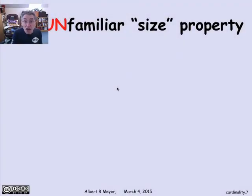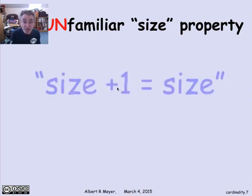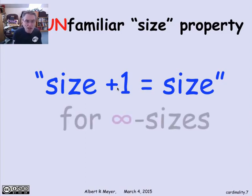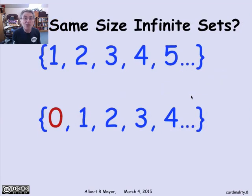Well, let's look at an unfamiliar size property, something that's not true of finite sets, where we have to start being careful and not just hand wave and use our intuition about finite sets. Namely, for infinite sizes, size plus 1 is equal to size. Now, what exactly does that mean? Well, let's just illustrate it with an example. In fact, in some ways, you could say the definition of an infinite set is that its size plus 1 is equal to its size.